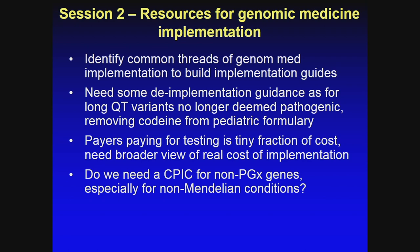Session two was to talk about resources for genomic medicine implementation. We need to identify common threads of genomic medicine implementation to build implementation guidelines — we saw a nice example of that in the IGNITE-SPARC program. We need to think about de-implementation guidance, such as for long QT variants no longer deemed to be pathogenic, and moving codeine from the pediatric formulary. Payers paying for testing is a tiny fraction of the cost; we need a broader view of what the real cost of implementation is. Do we really need a CPIC for non-PGX genes, especially for non-Mendelian conditions?